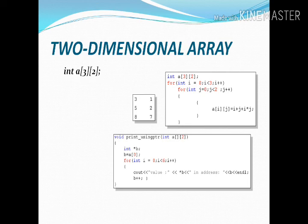Now I'm explaining int a[3][2] — that is row and column. The row is three and column is two. On screen: for i = 0; i < 3; i++; for j = 0; j < 2; j++ — using i and j you can get the two-dimensional array and its representation.